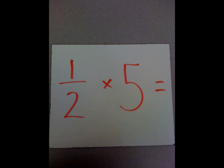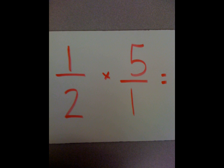This example we will work with 1 half times 5. The first thing I need to do is take 1 half times 5 and turn 5, the whole number, into a fraction.